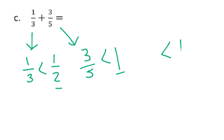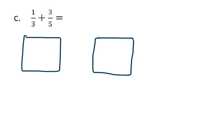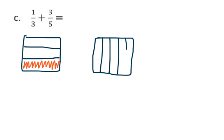Now we're going to go ahead and solve the problem. We're going to use the rectangular fraction model — we've done that in some previous lessons, so students should be familiar with that. We're going to section off the first rectangle into thirds and shade in 1 third. Then, in the next rectangle, we're going to section this off into fifths and shade in 3 fifths.